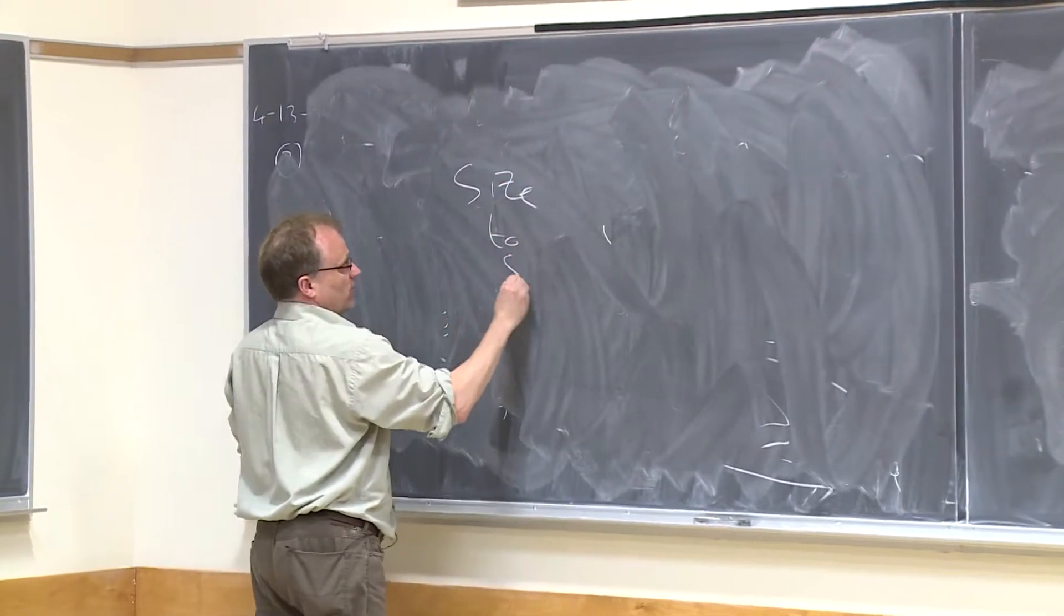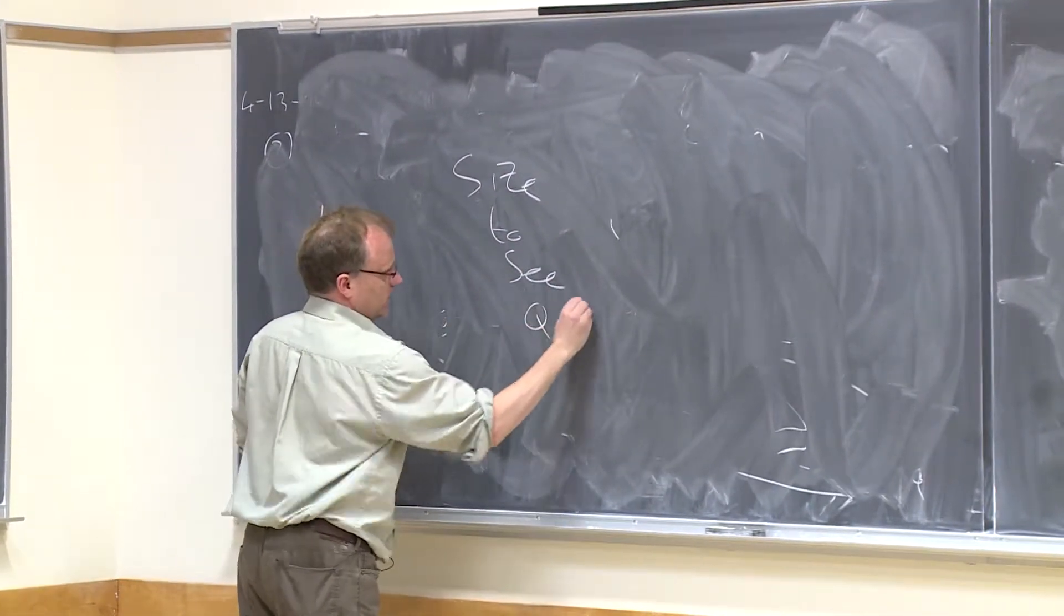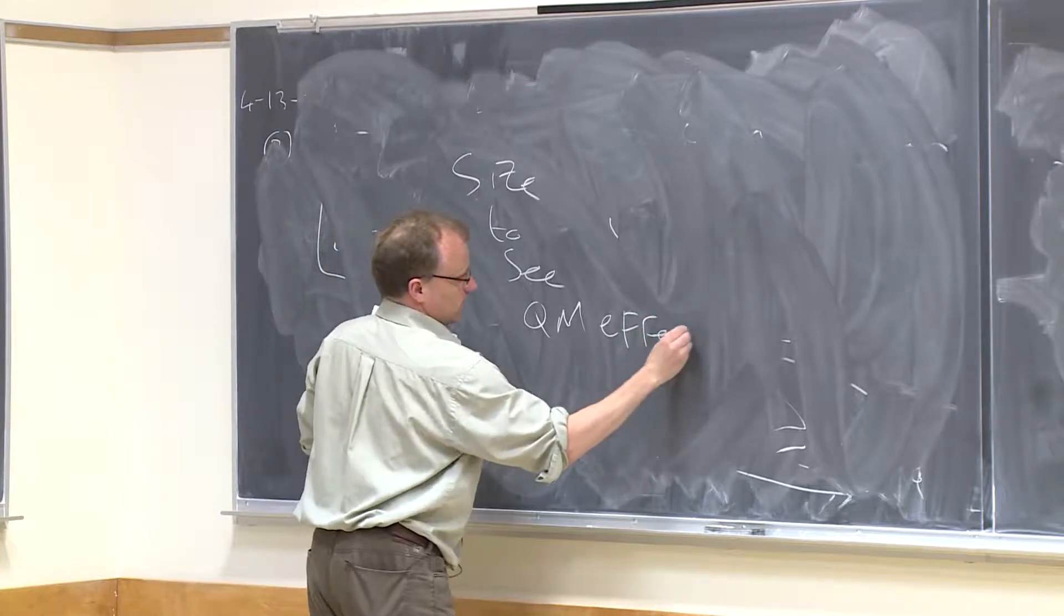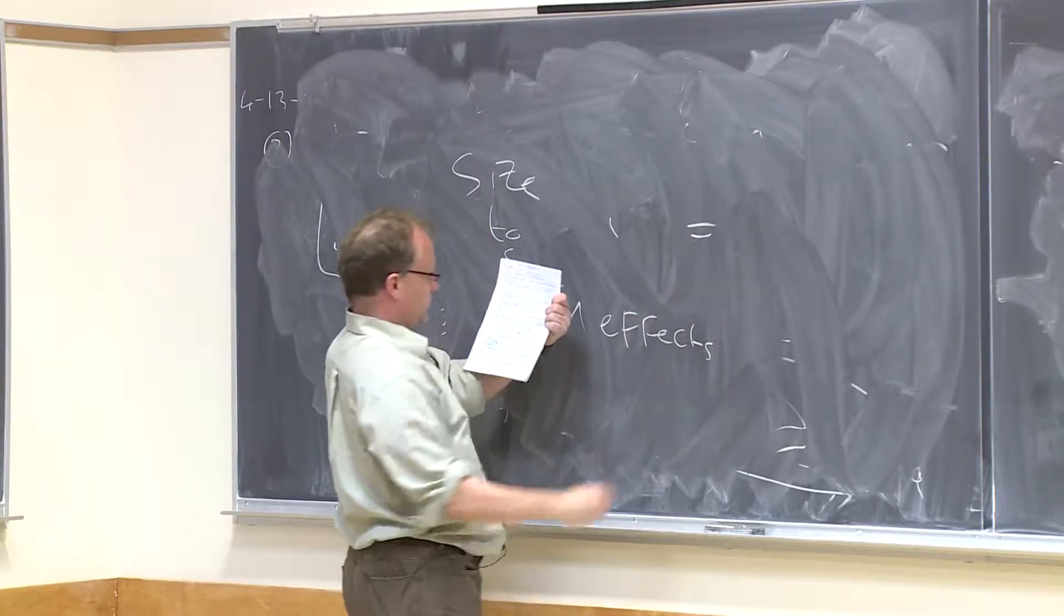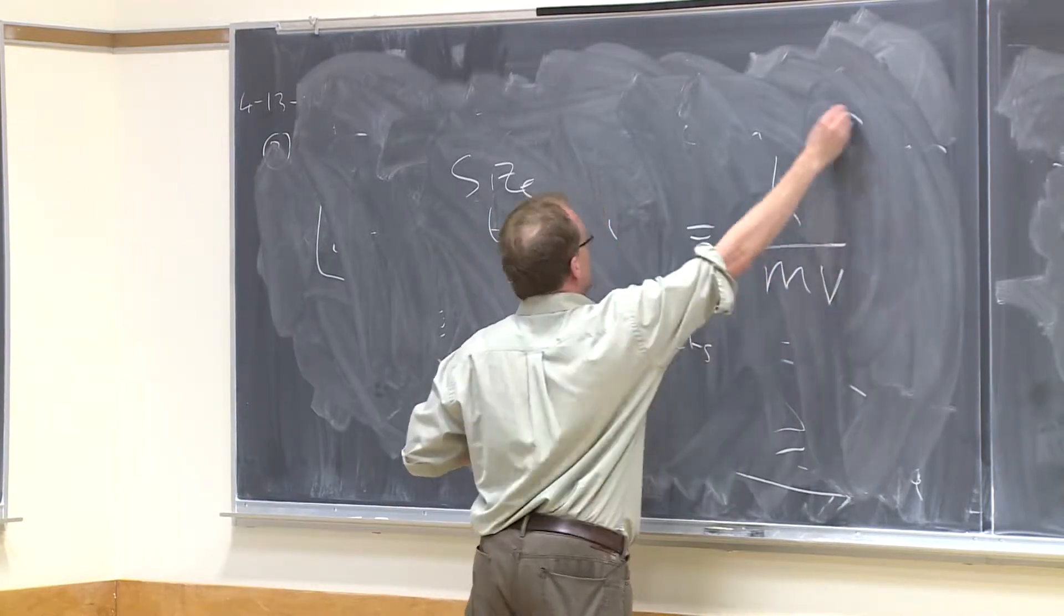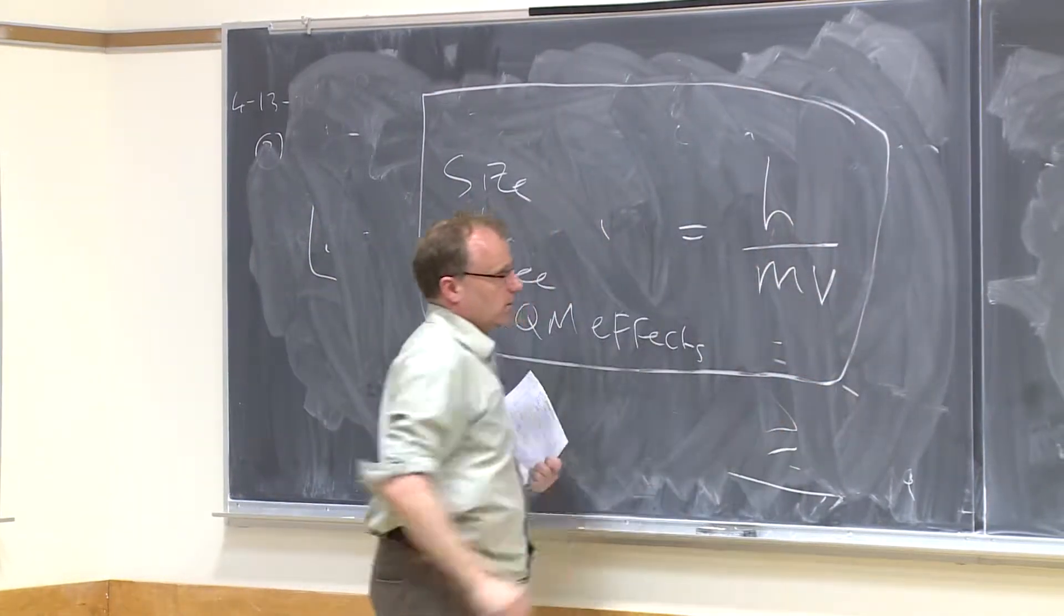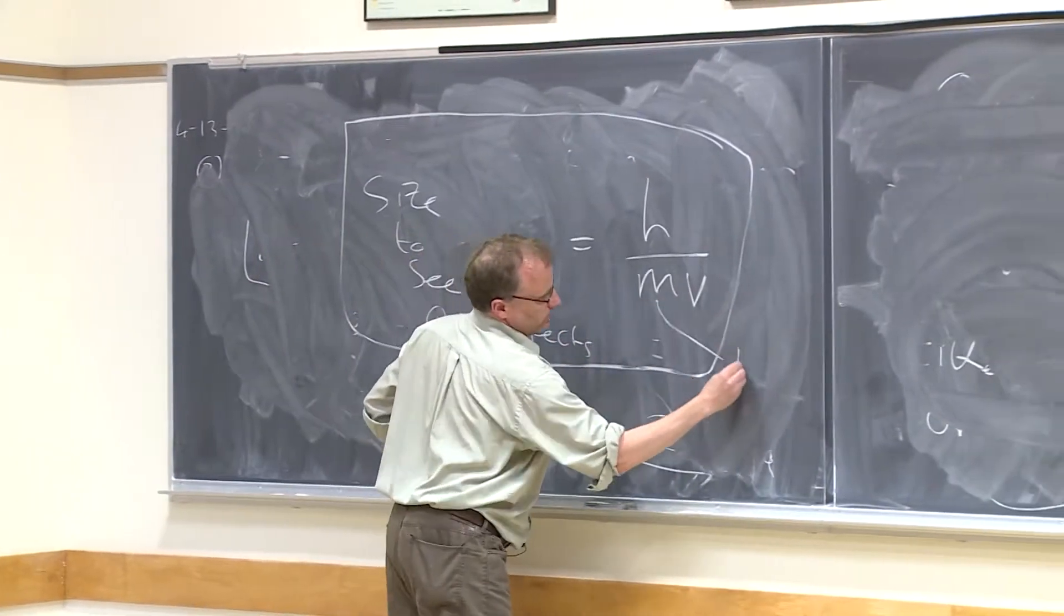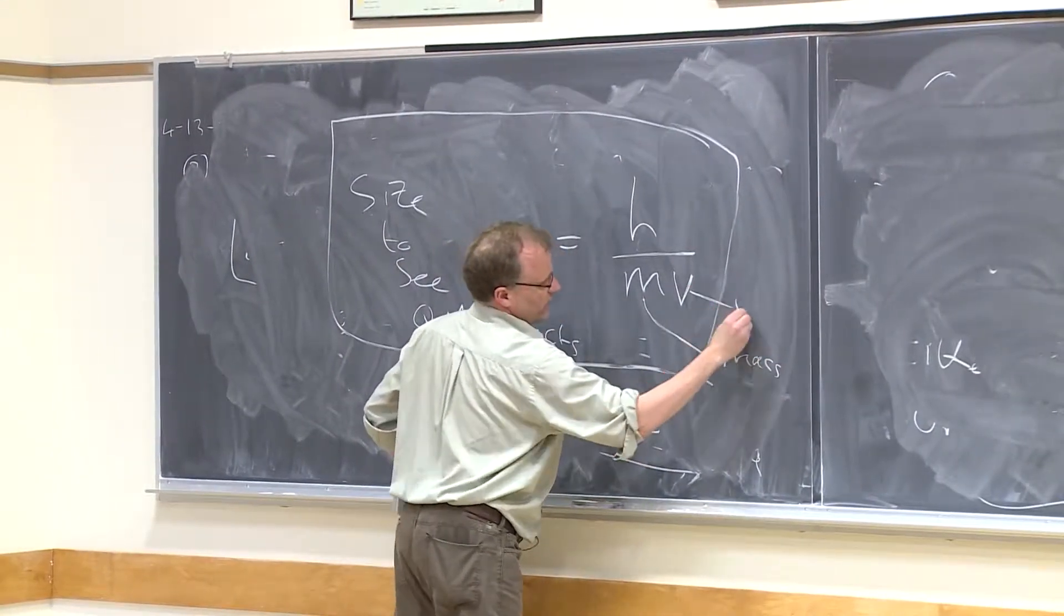The size to see quantum mechanical effects is equal to h divided by mv, where m is the mass and v is the velocity.